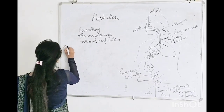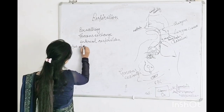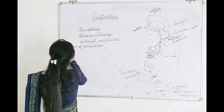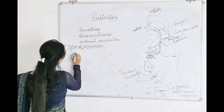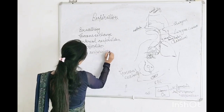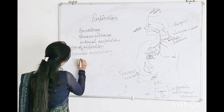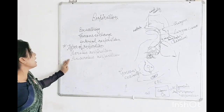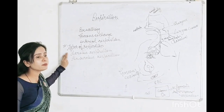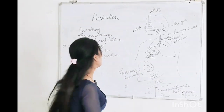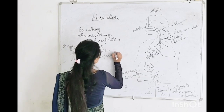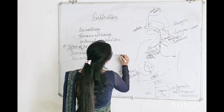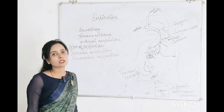Now we will discuss types of respiration. Types of respiration — there are two types. First is aerobic respiration, and second is anaerobic respiration. Aerobic respiration occurs in the presence of oxygen. Anaerobic respiration completes in the absence or lack of oxygen.